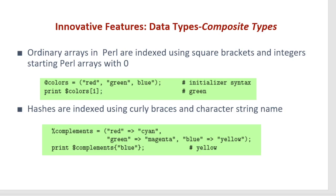In Perl, array indexing starts at zero. For example: '@colors = ("red", "green", "blue")' creates an array with three elements in double quotes. Then 'print $colors[1]' outputs 'green', since index 0 is red and index 1 is green. Hashes are indexed using curly braces with a string key. For example, a hash '%complements' can have key-value pairs like red-cyan, green-magenta, blue-yellow. Printing '$complements{"blue"}' outputs 'yellow'.